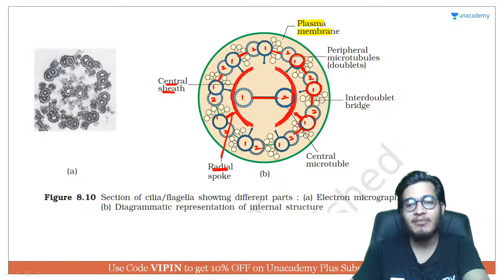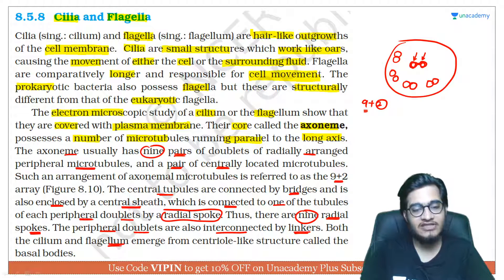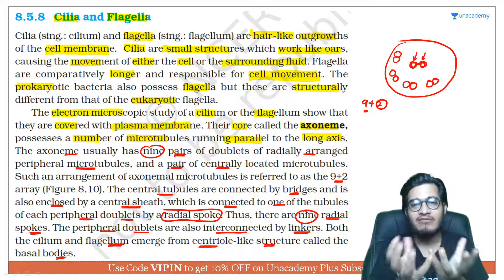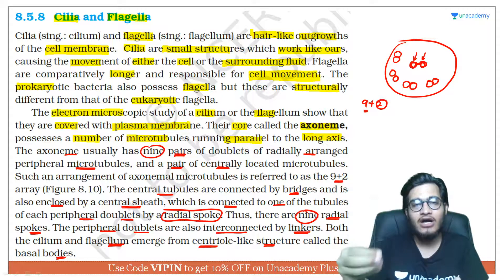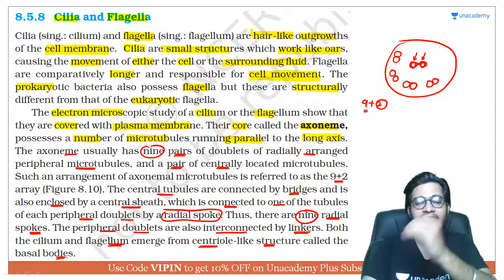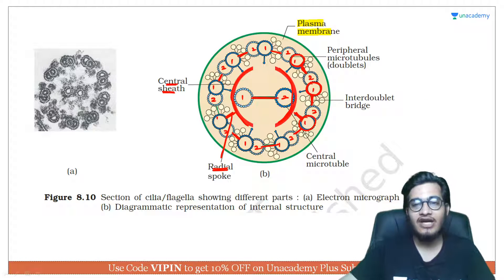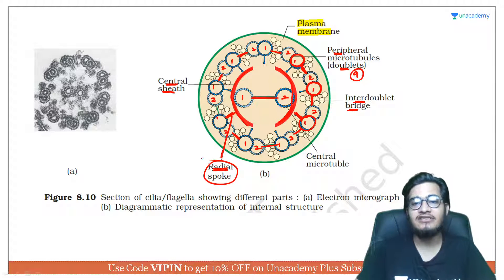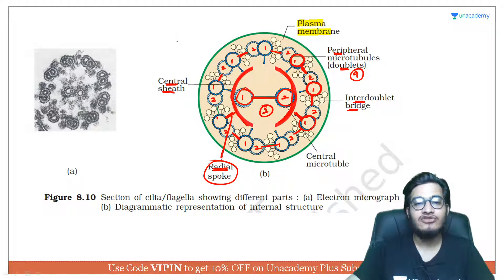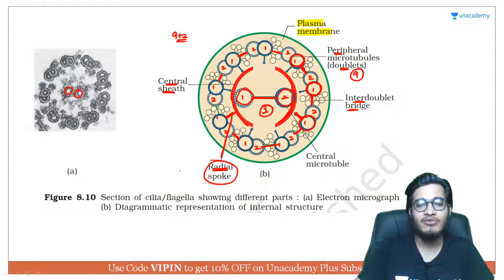Specifically, these linker proteins are called nexin links, as they are made of nexin protein. Both cilia and flagella emerge from centriole-like structures called basal bodies — the particular part of the cell membrane from which they emerge is called the basal body, and from it the hook and filament extend outside the cell. So in summary: there are 9 peripheral microtubule doublets with inter-doublet bridges; radial spokes connect them to the central sheath; and within the central sheath are two singlet microtubules — this is the 9+2 arrangement.